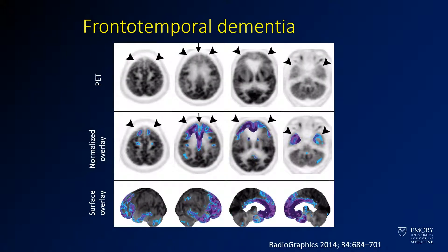Here you see frontotemporal dementia. Again, you have raw images across the top and a normalized overlay. You'll see decreased activity in the frontal lobes and also decreased activity in the temporal lobes. That one's easy to remember because the areas of abnormal activity are in the name — frontotemporal dementia.